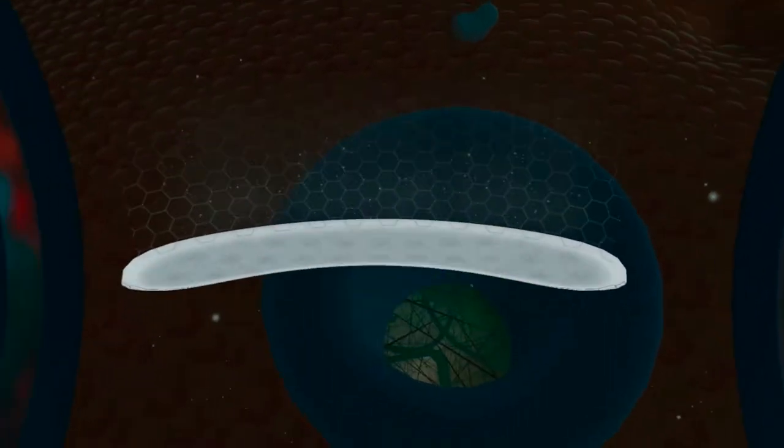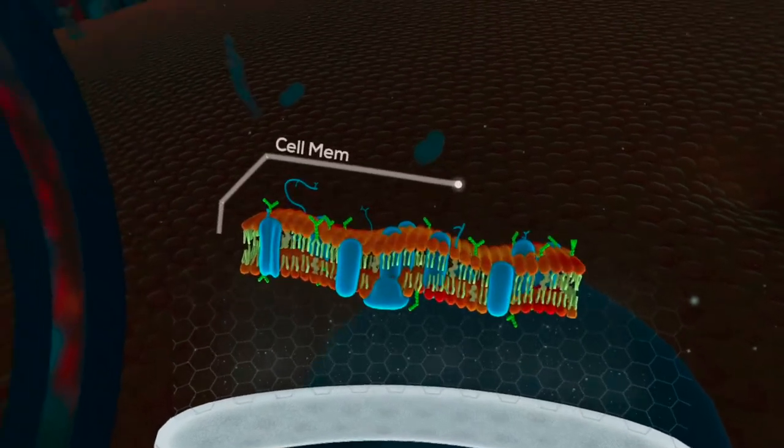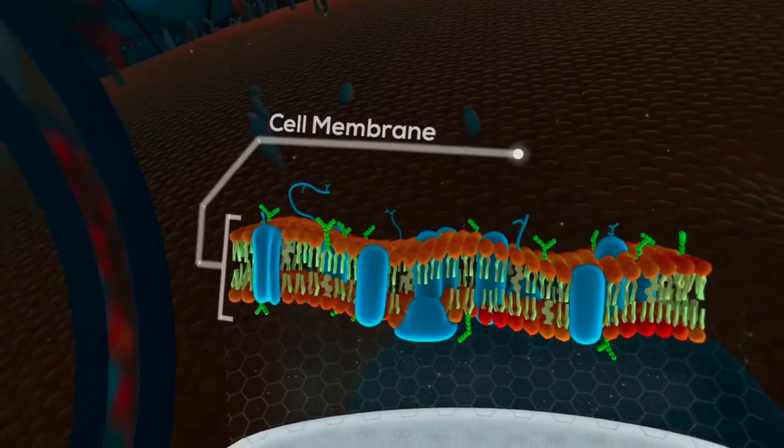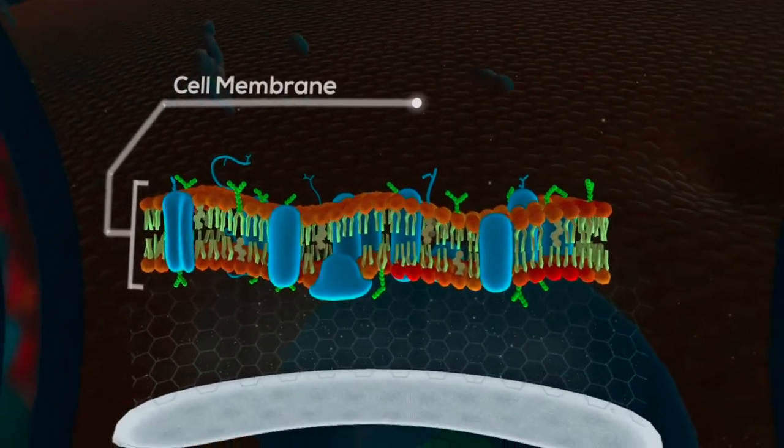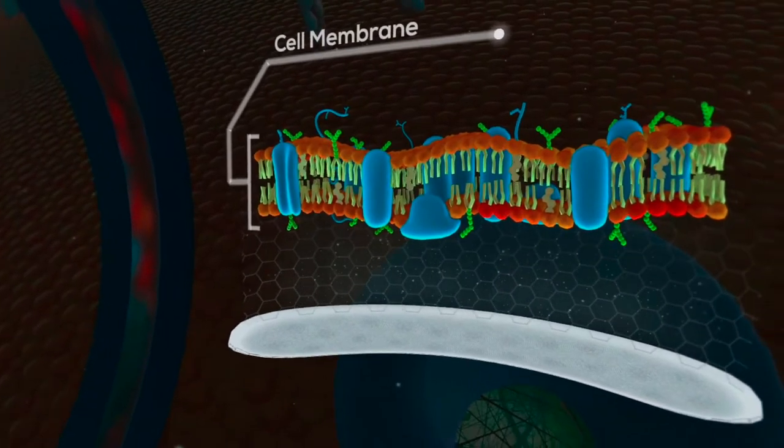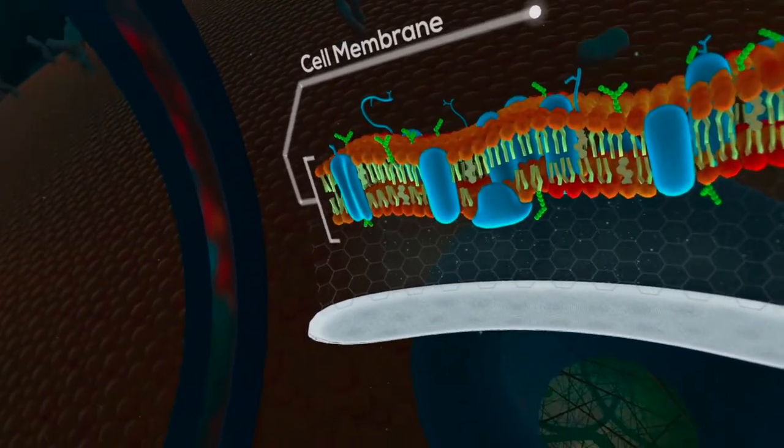There are thousands of receptor proteins on the surface of the cell. Some of these proteins are tasked with transferring information, and others with transferring cargo.